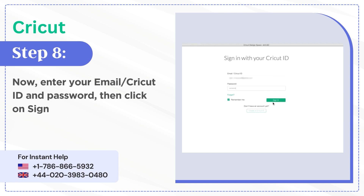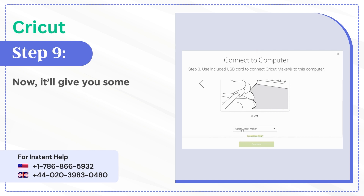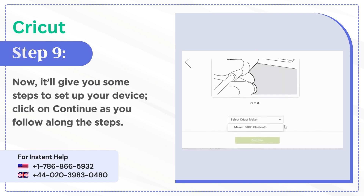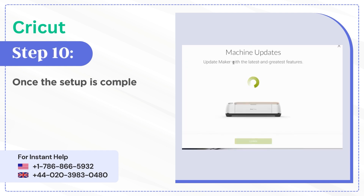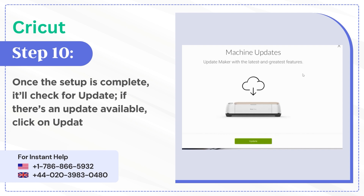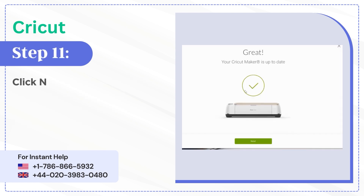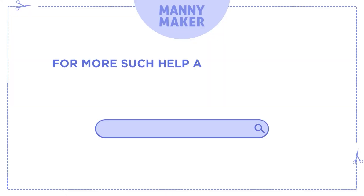Then click on Sign In. Step 9: Now it'll give you some steps to set up your device — click on Continue as you follow along the steps. Step 10: Once the setup is complete, it'll check for updates. If there's an update available, click on Update. Step 11: Click Next, then Next in the success window.